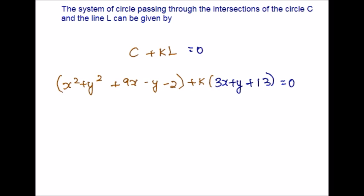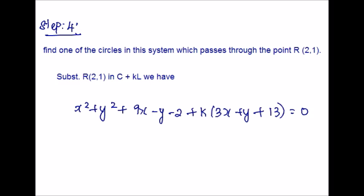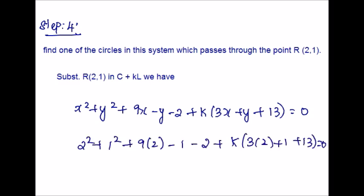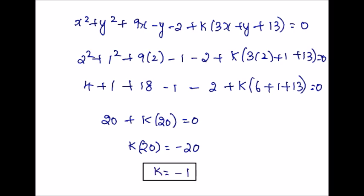This is the system of circles passing through points P and Q. To find the specific circle that also passes through point R (which is (2, 1)), we substitute R into C + kL. Replacing x with 2 and y with 1, expanding the exponents, combining like terms, and subtracting 20 from both sides, then dividing both sides by 20, we find k = negative 1.